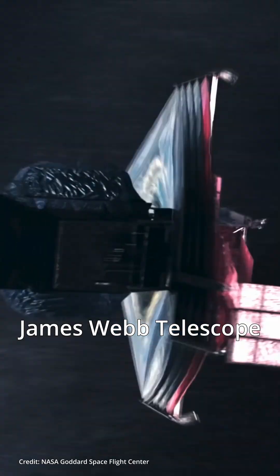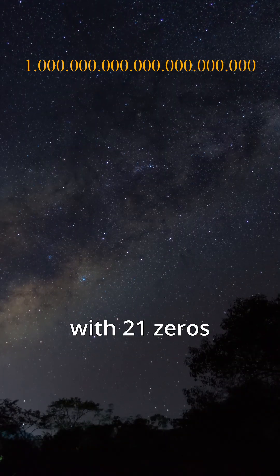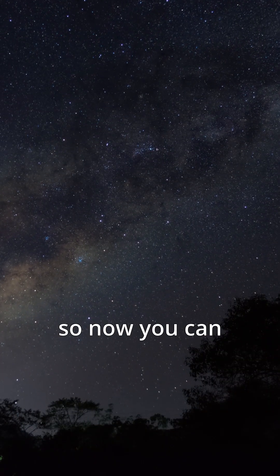So put it all together and the James Webb Telescope can see more than a quintillion stars. That's the one with 21 zeros. So now you can ask your friends.